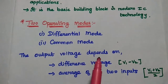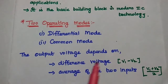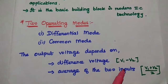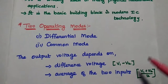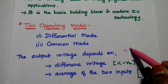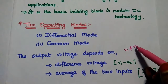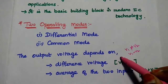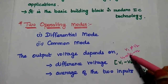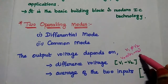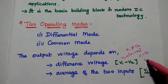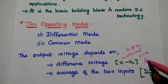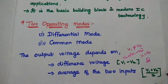The output voltage depends on either the difference between two input signals or the average of the two input signals. If both the inputs are not equal — that is, V1 is not equal to V2 — then we can get the difference output. We can get the output voltage based on the difference between these two. If V1 is equal to V2, we can get zero output. In that case, we can consider the average input.